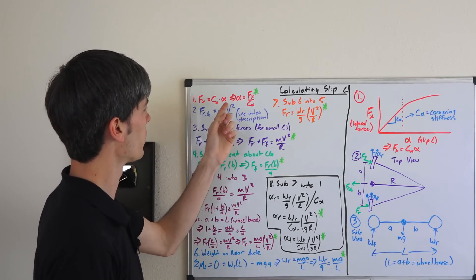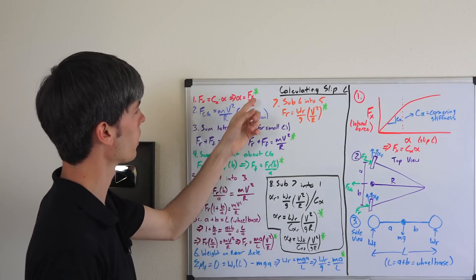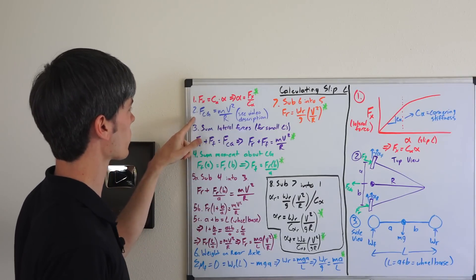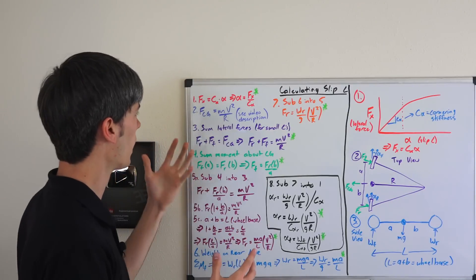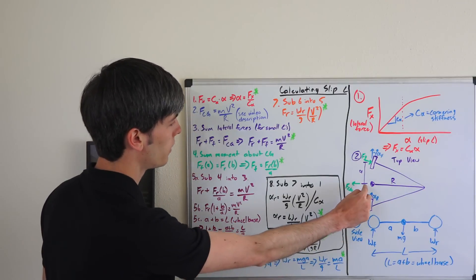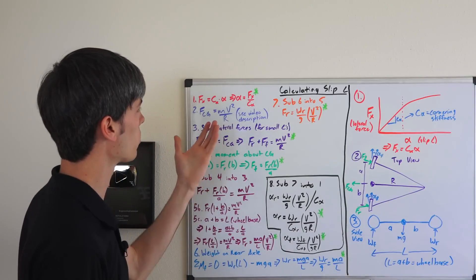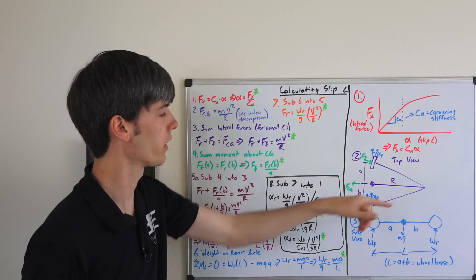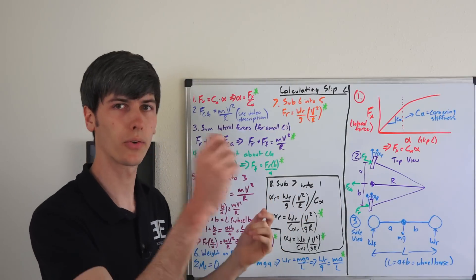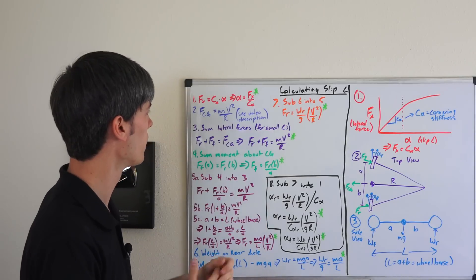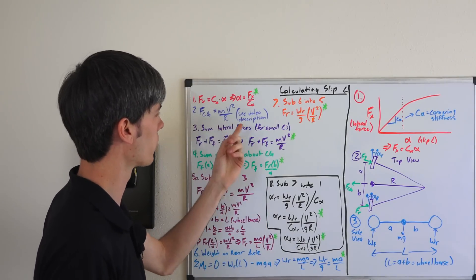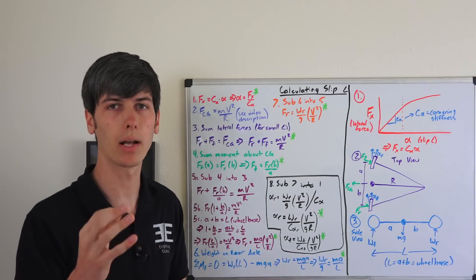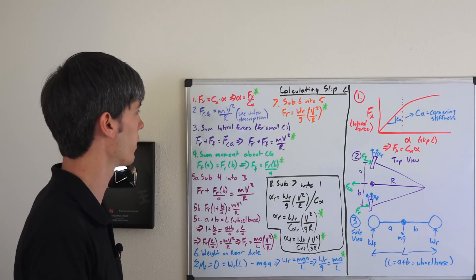To calculate the slip angle we divide: slip angle equals lateral force divided by cornering stiffness. Our next equation is a basic dynamics equation: the force at the center of gravity of a vehicle going around a corner equals mv²/r, where m is the mass, v is the speed, and r is the radius — like a ball on a string swung at constant speed. I won't derive it here but will link a derivation in the description.